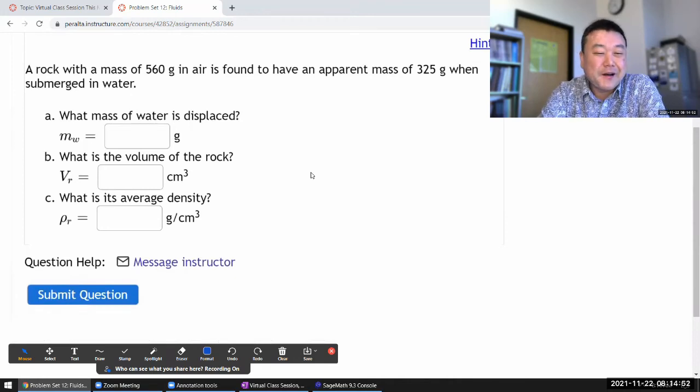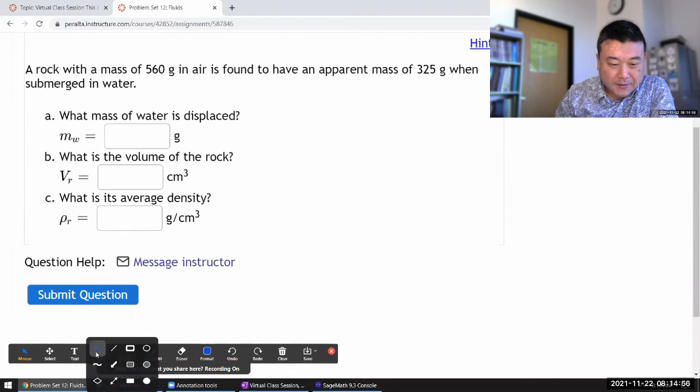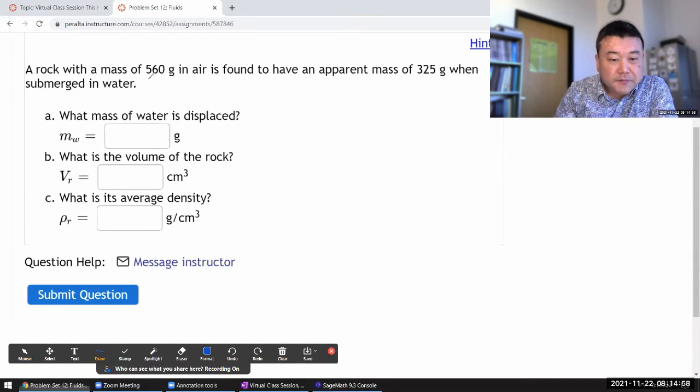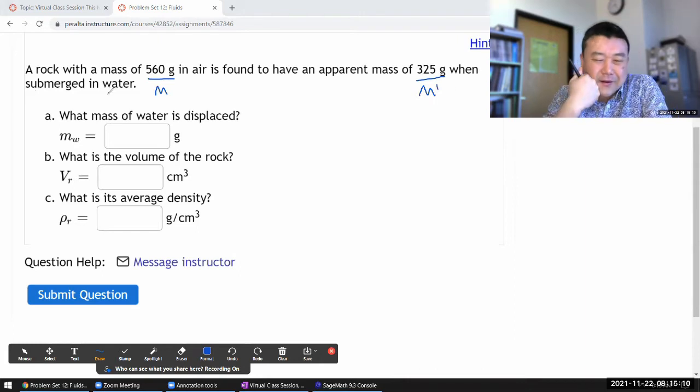So this question says a rock with some mass—let me just start by labeling things—with some mass in air is found to have an apparent mass of different value when submerged in water. I think there are different ways to do it. Let me do it a little bit differently than how it might be done.